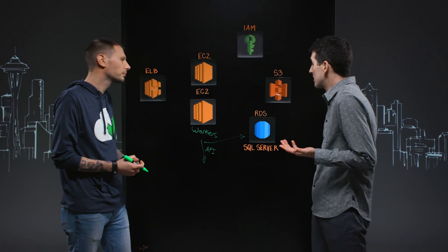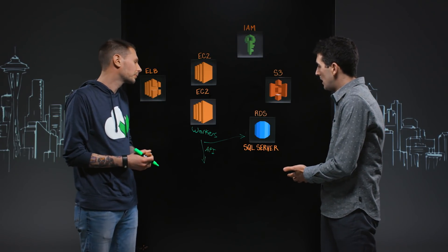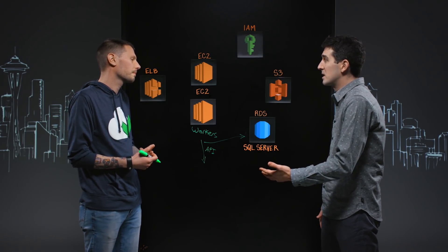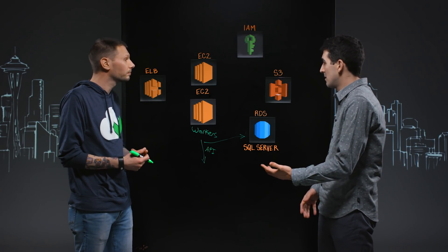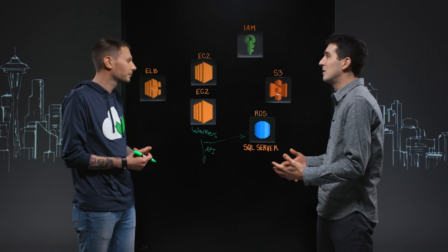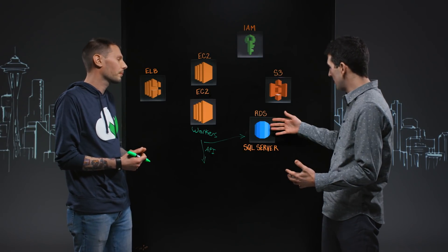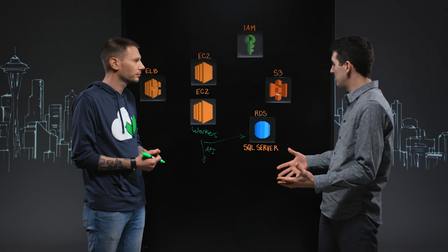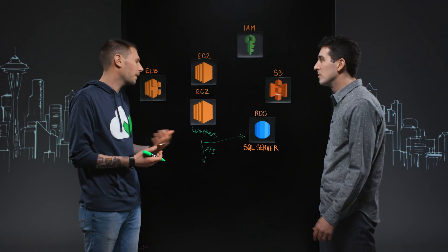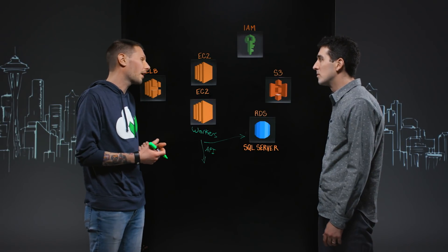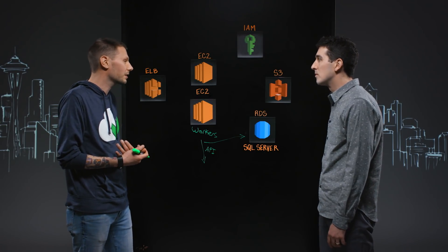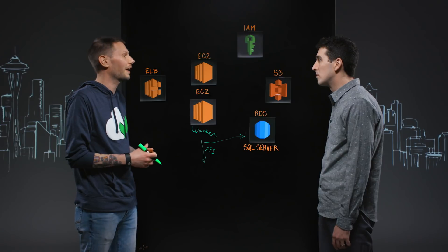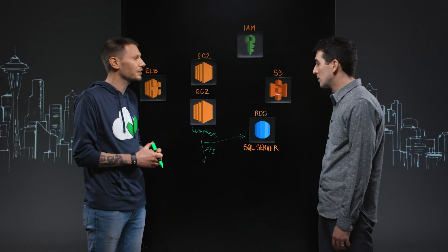CloudChecker targets a lot of enterprise customers, so that's going to be a lot of data. We have over 300 RDS instances with a total of 550 terabytes of allocated storage space.